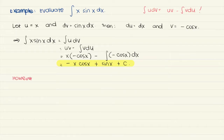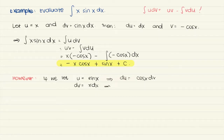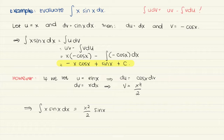However, note that if we had chosen u to be sine x and dv to be x dx instead, then du would be cosine x dx and v would be x squared over 2. Plugging into the formula, the integral of x sine x dx would become x squared over 2 times sine x minus the integral of x squared over 2 cosine x dx. But this is actually more complicated than the original integral. The trickiest part of using IBP is choosing which u and dv to use — similar to the dilemma when using the substitution rule.